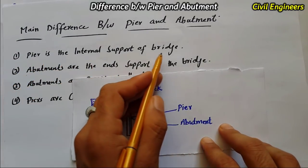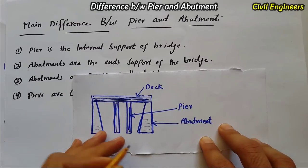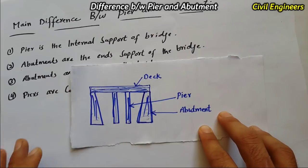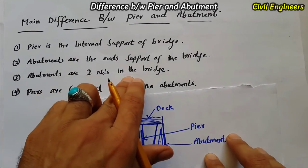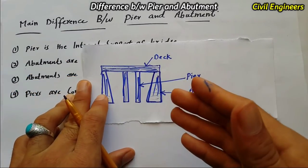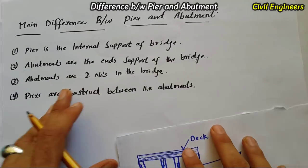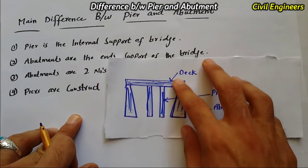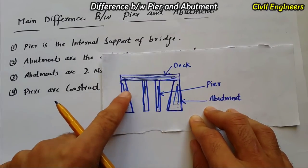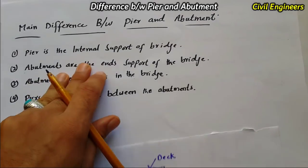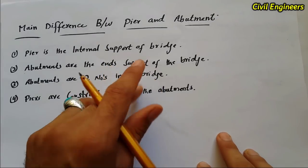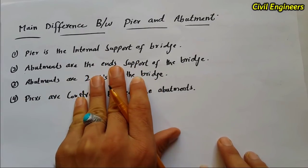Piers are the internal supports of the bridge, and abutments are the end supports — there are exactly two abutments. Piers can be more than two in number and are constructed between the abutments. For reading the full article, visit www.civilstudents.com. Don't forget to like and share this video with your friends. Thanks for watching, bye.